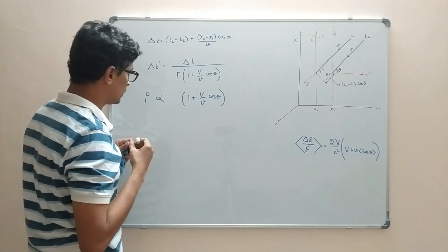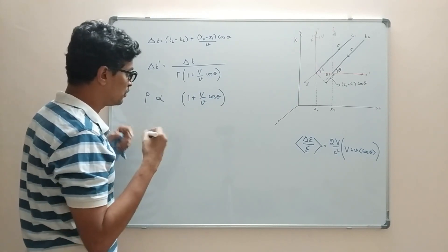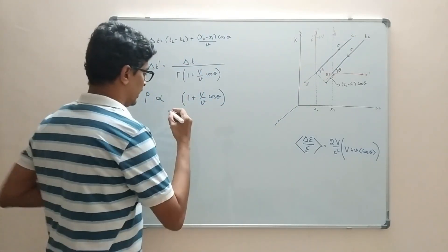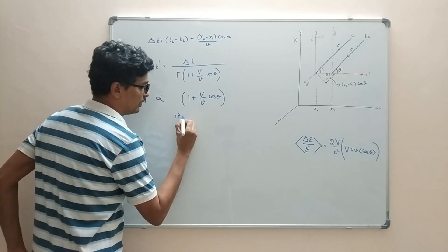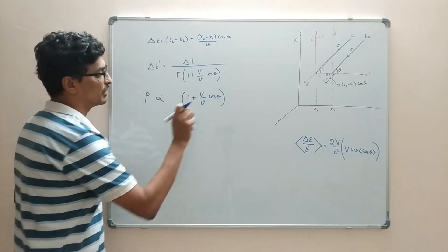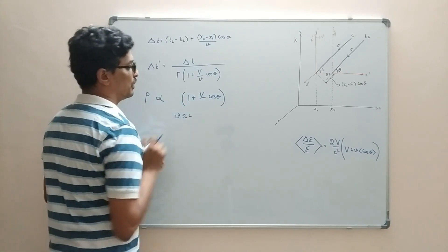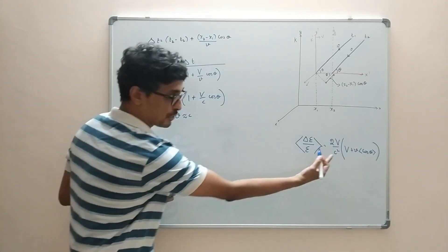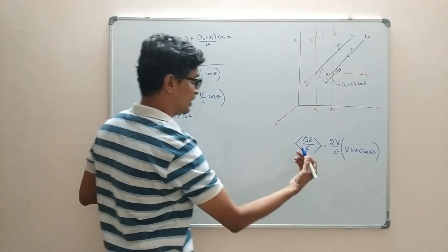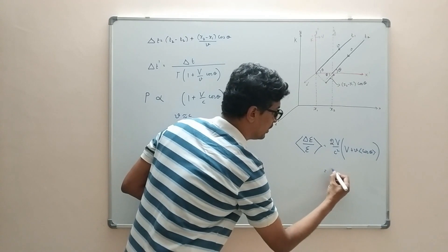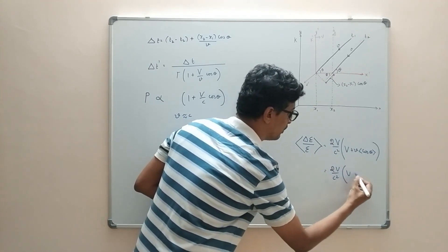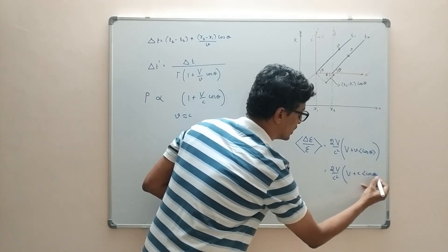For the relativistic case, we approximate the particle velocity as v ≈ c. Then v/v becomes v/c, and the energy gain expression becomes Δε/ε = (2v/c²)(v + c·cosθ).